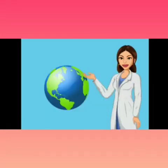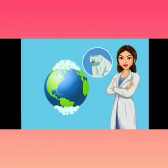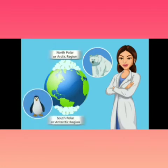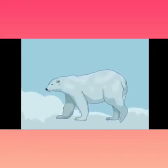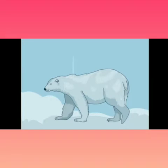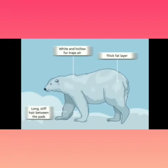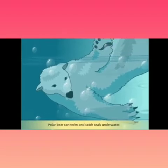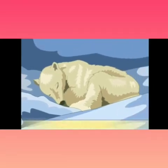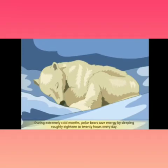Adaptation is the reason polar bears are found in the north polar or Arctic region, and penguins are found in the south polar region. What makes the polar bear able to live in that icy polar region? First, white and hollow fur traps air. Second, a thick fat layer. Third, long stiff hair between the pads. These are all special features of a polar bear. Polar bears can swim and catch seals underwater, and can hibernate during extremely cold months to save energy.